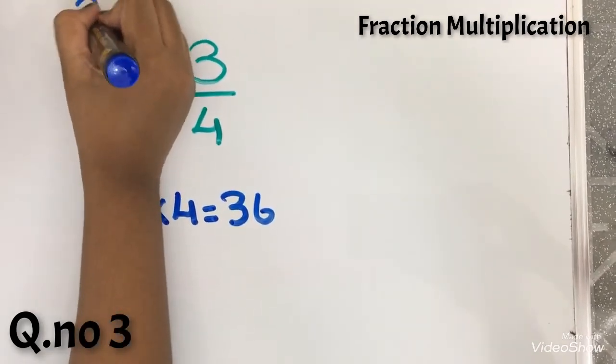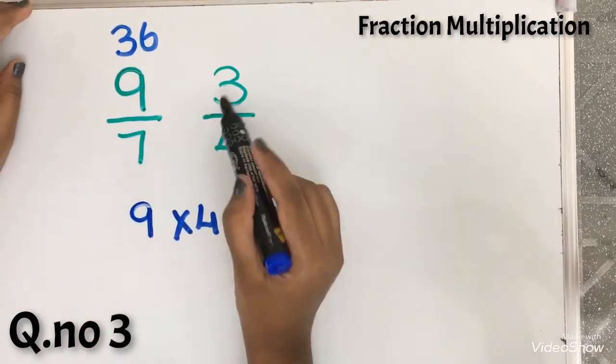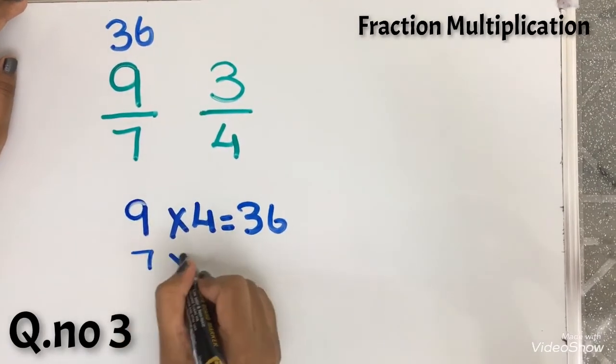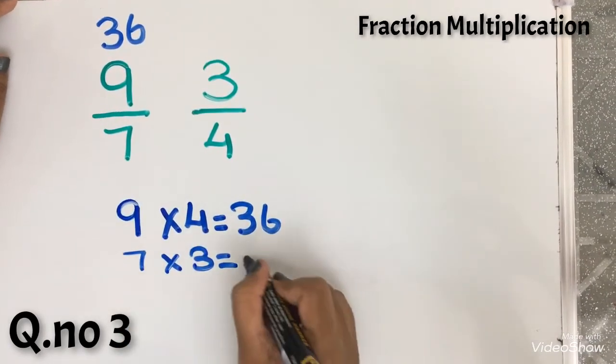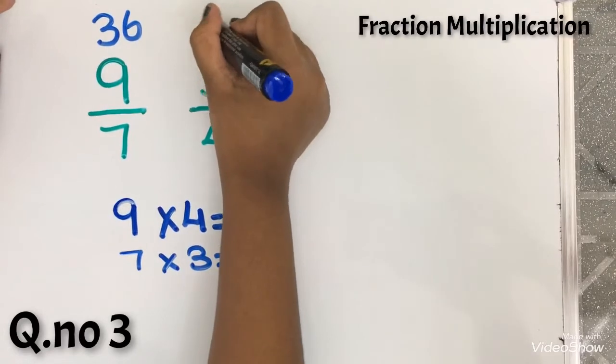Let's write here. And 7 into 3 equals 21. Let's write it here.